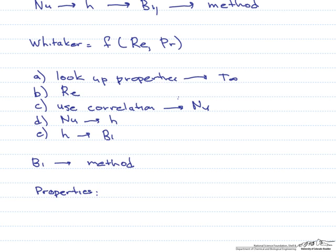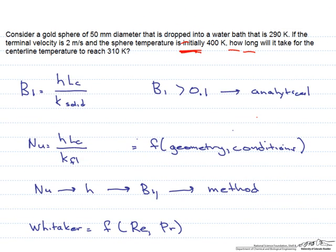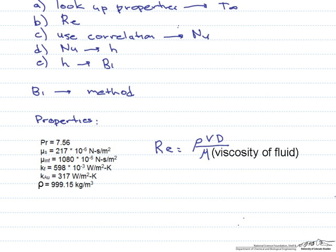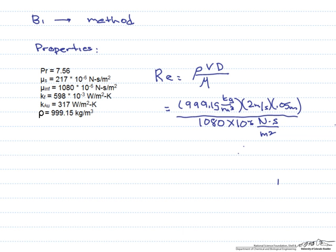We start by finding the properties at the temperature of the water bath, which is 290 Kelvin. Here are the properties needed to calculate the Reynolds number. The Reynolds number is the density times the velocity times the diameter divided by the viscosity. Based on the problem statement and these properties, we get a Reynolds number equal to 92,513.